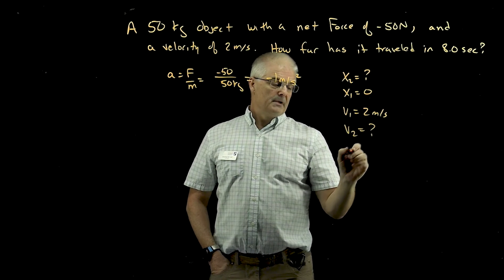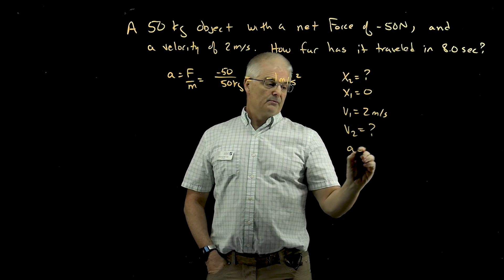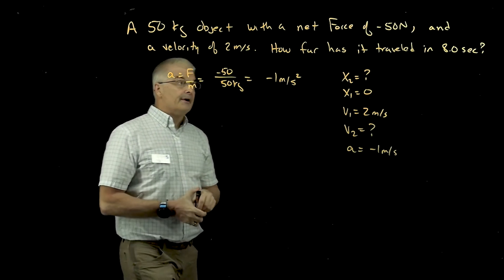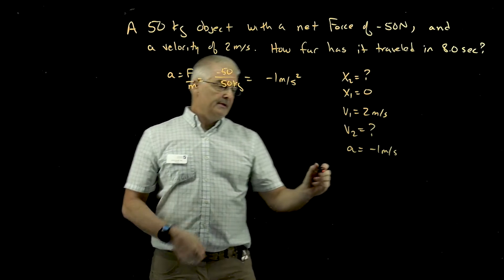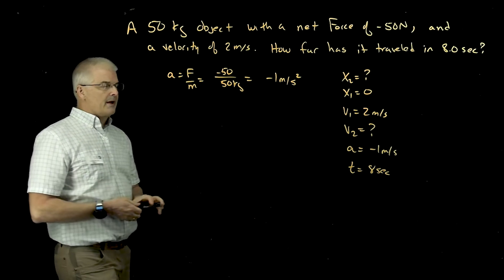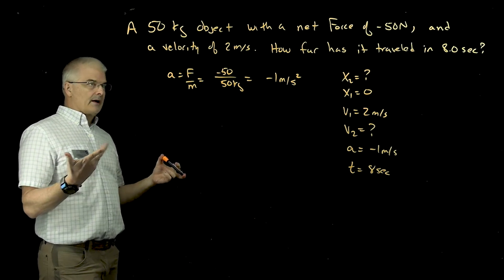But we do know acceleration, which is negative 1 meters per second. So this object is slowing down, right? And then time we knew was 8 seconds. So then we're going to look at our kinematics equations, and we're going to try and solve for how far.